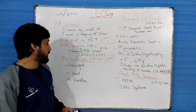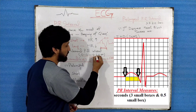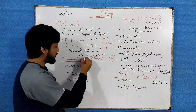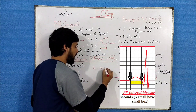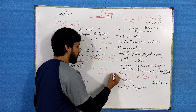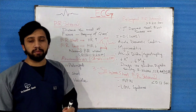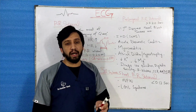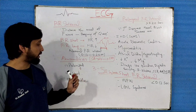Normally, the PR interval is between 0.12 seconds and 0.20 seconds. On an ECG paper, this corresponds to three to five small square boxes. The PR interval can be prolonged, it can be short, and there can also be a variable PR interval.